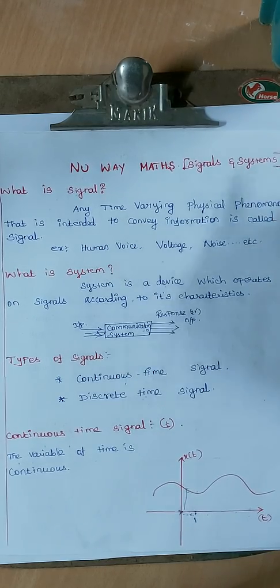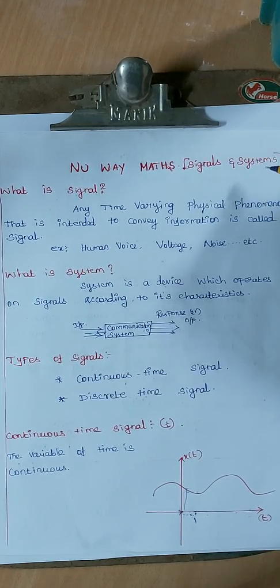This is also relevant for TNE and BAE exams. These are all signals-related topics, carrying 5 to 7 marks in the exam.